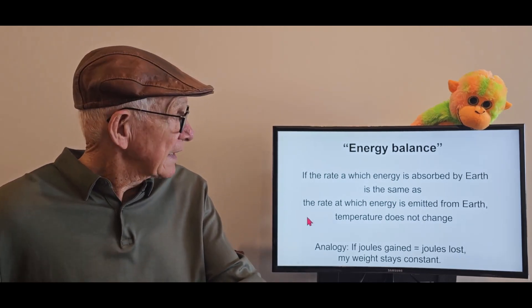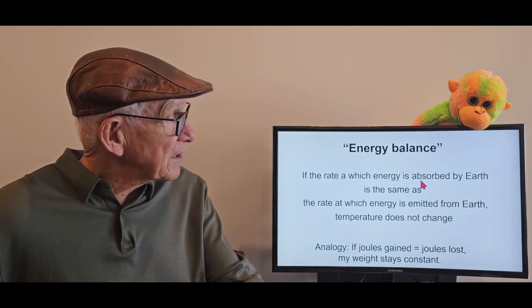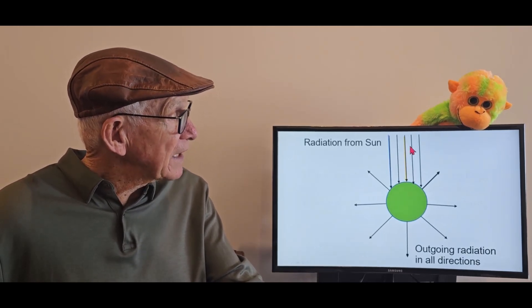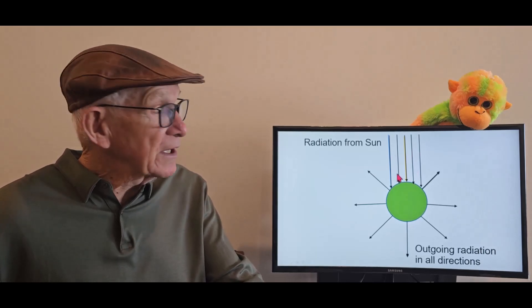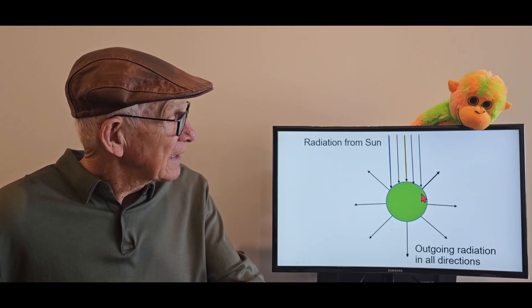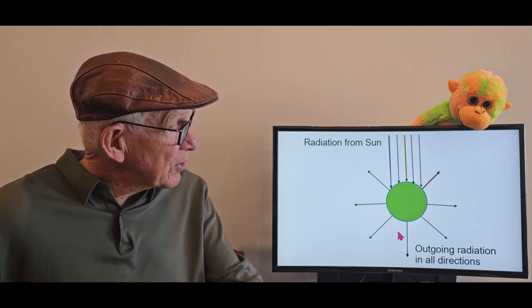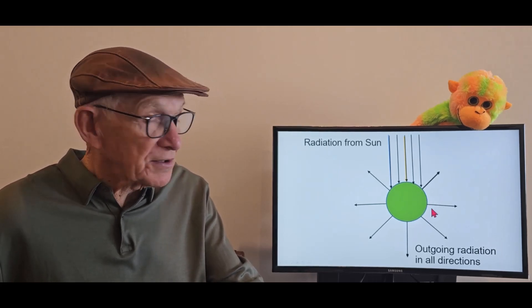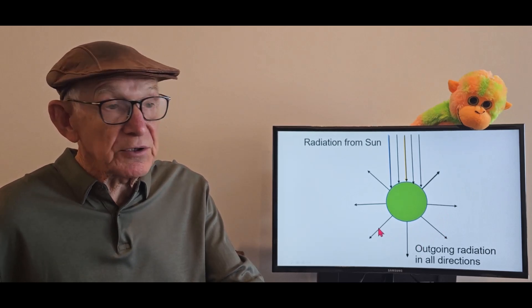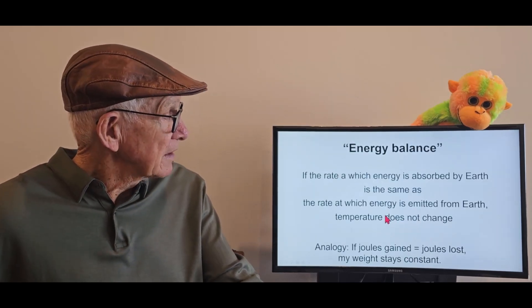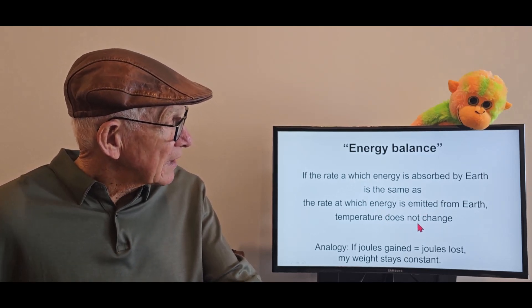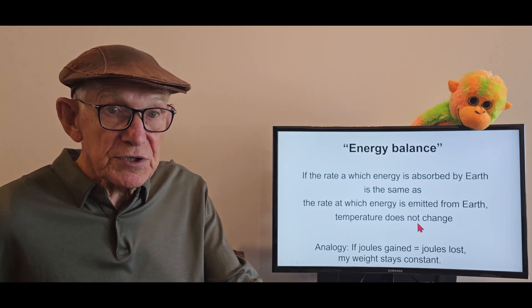If the rate at which energy is absorbed by Earth, if the amount of energy per second being absorbed by the surface of the Earth is the same as the amount of energy per second that's being lost from the surface of the Earth by those radiations going out towards space, then the energy of the Earth is constant and the temperature doesn't change.